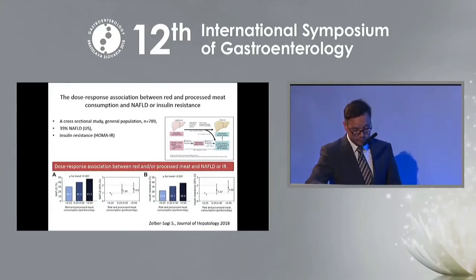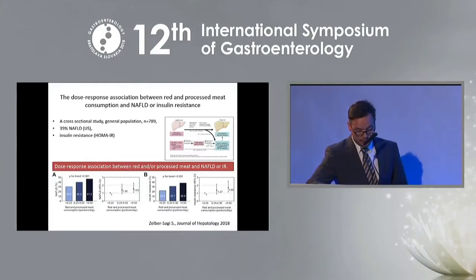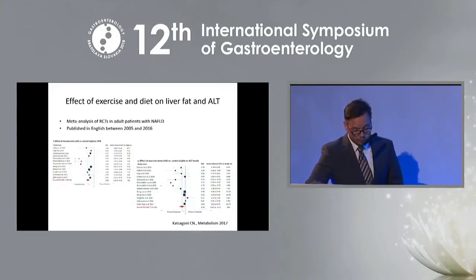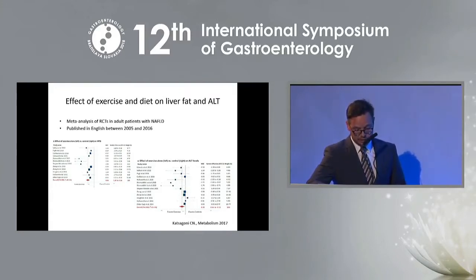High red and processed meat consumption is related to several diseases. Cooking meats forms heterocyclic amines, which have harmful effects on health. High consumption of red or processed meats is directly related to NAFLD and insulin resistance; therefore, limiting consumption of unhealthy meats may be advised. Given the key role of lifestyle interventions in the management of NAFLD, there was a need for strong detailed evidence on the effects of exercise and diet. The aim of this meta-analysis was to evaluate the effects of exercise and diet on liver enzymes, intrahepatic fat, and liver histology.